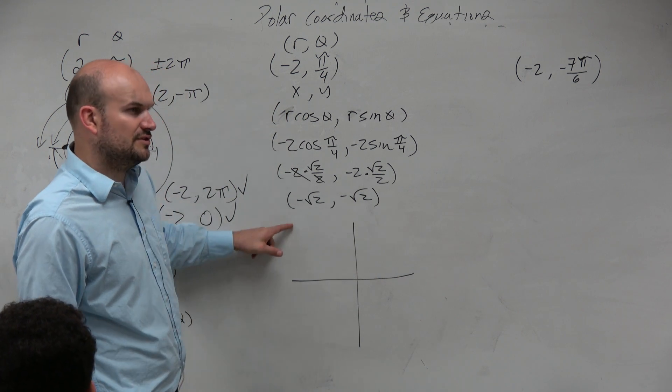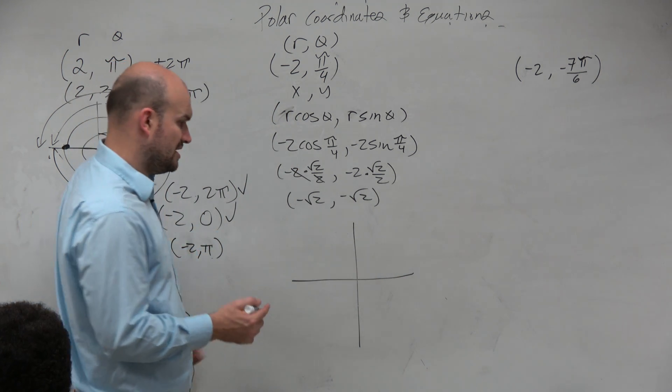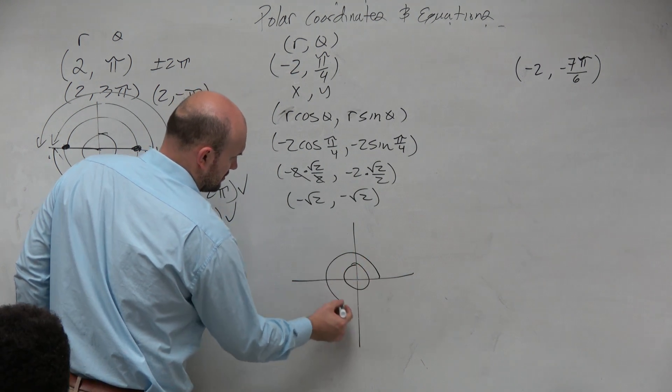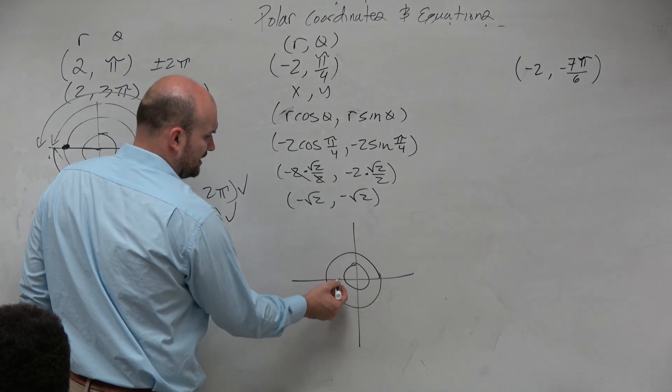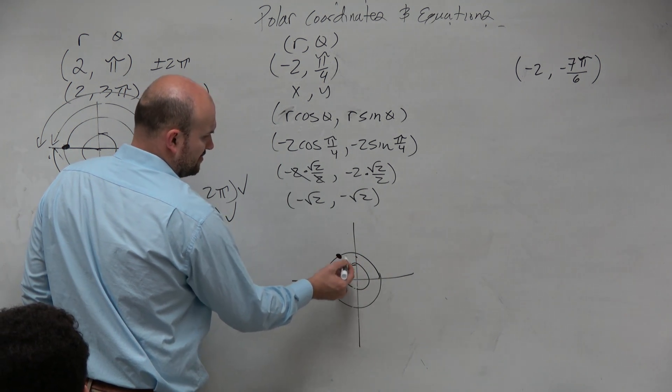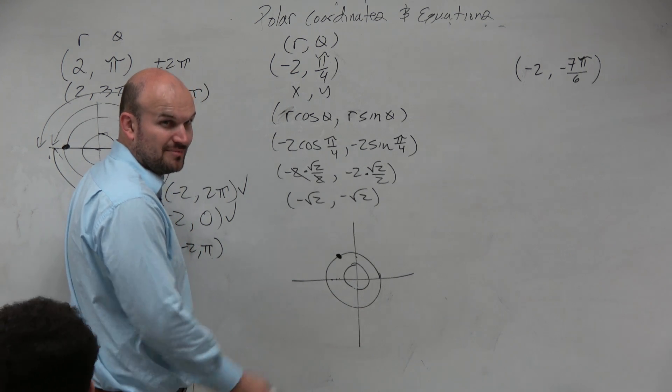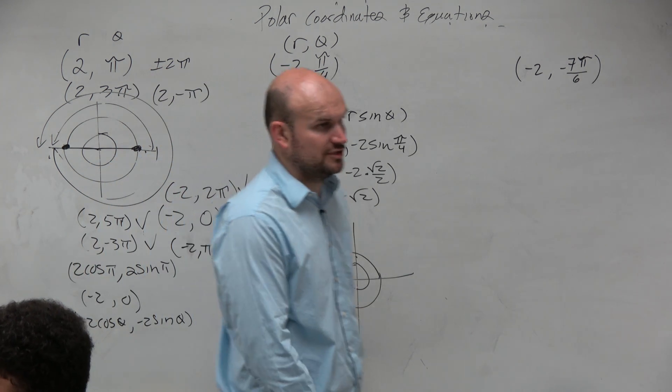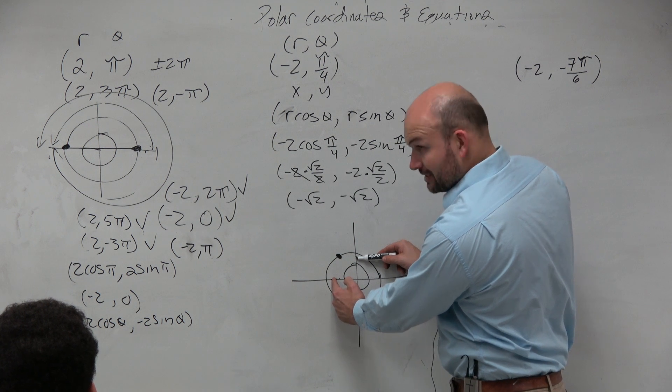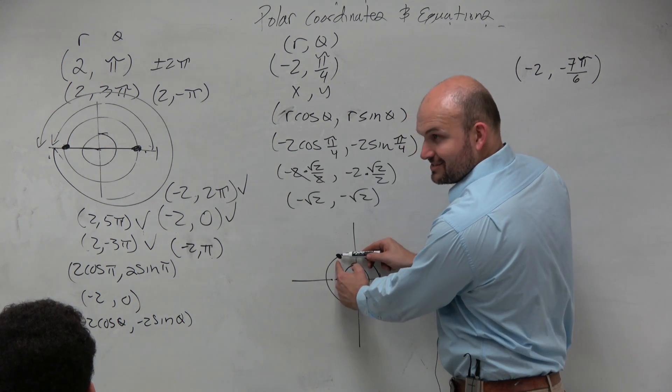So again, the square root of 2 over 2, that's going to be roughly like 1 and change. So if we're at 1 and change, and we're at 1 and change, looks like I'm kind of like probably somewhere around there. My radius, my circles are really badly drawn. But if you would agree with me, if you're at 1 and change and 1 and change, they're going to meet on that circle right there.